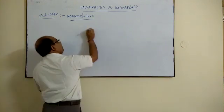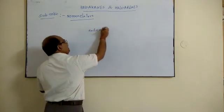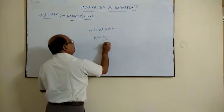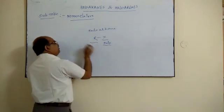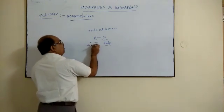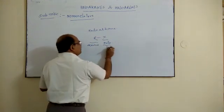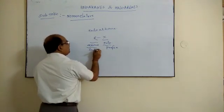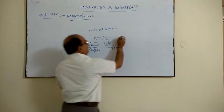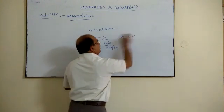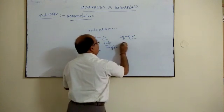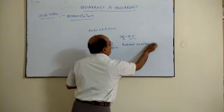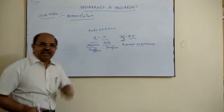In IUPAC we write haloalkanes. It is your RX — for X we use the word 'halo' and for R we use the word 'alkane.' So 'halo' is your prefix while 'alkane' is your suffix. So if we have a compound like CH₃Br, the prefix is bromo, and the IUPAC name is bromomethane.